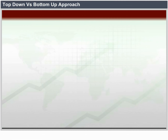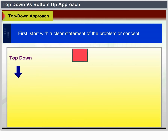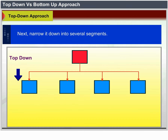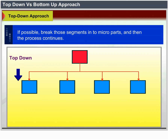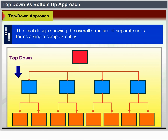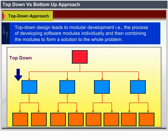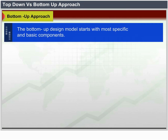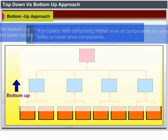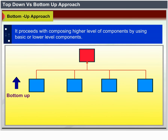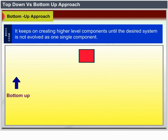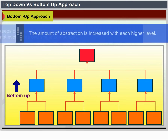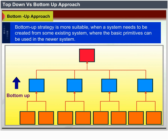Top-down versus bottom-up approach. Top-down approach: start with a clear statement of the problem, break it down into parts, and continue breaking down further parts until a final design showing the overall structure is achieved. Top-down design leads to modular development — developing software modules individually and combining them to form a solution. Bottom-up approach: starts with the most specific and basic components, composes higher-level components from basic ones, and keeps creating higher-level components until the desired system is evolved as a single component. Bottom-up is more suitable when a system needs to be created from some existing system.